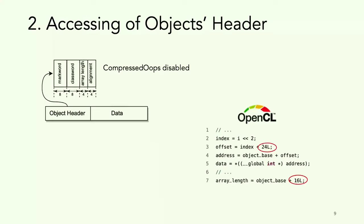Regarding the second aspect: accessing the object's header. Compressed oops were disabled, so we had 24 bytes of object header. On the right side, we can see a snippet of OpenCL generated by TornadoVM. We were creating an offset for the 24 bytes. We have the object base, which is the pointer to the heap, to the particular object.